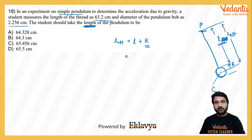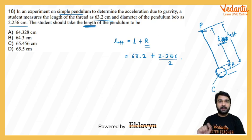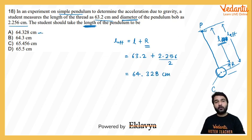So how much is this? This is going to be 63.2 plus 2.256 divided by 2, because 2.256 is the diameter of pendulum given, we need radius, so we divided it by half. Now if you solve this properly, then you get 64.328 cm, which means the option A given there, that option you will get here.